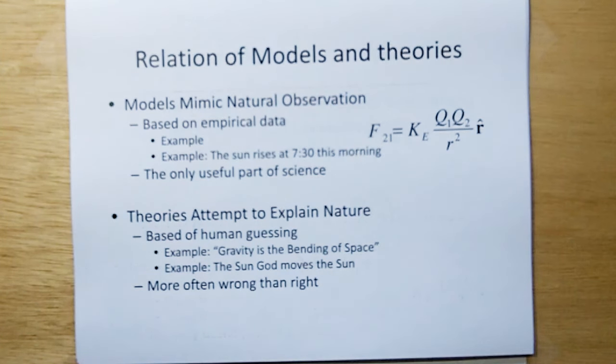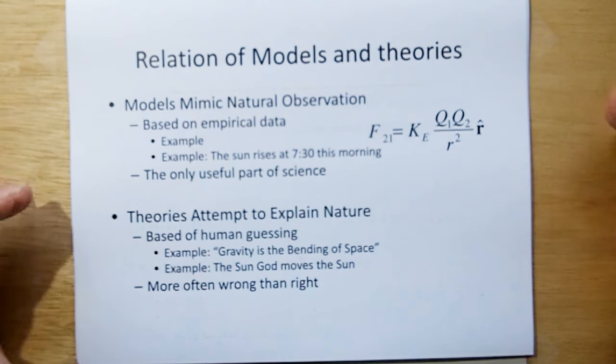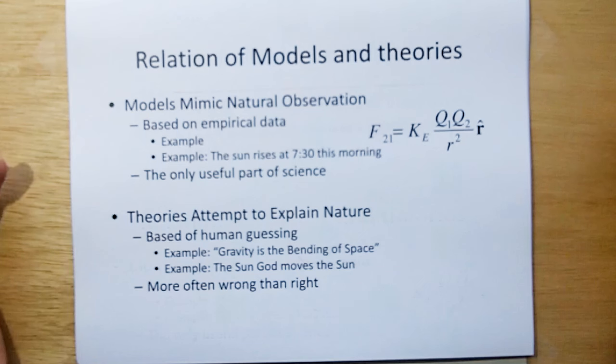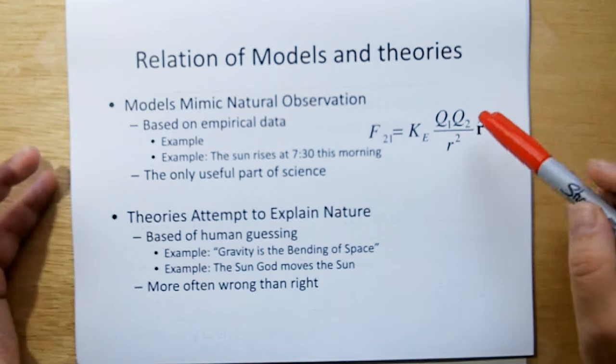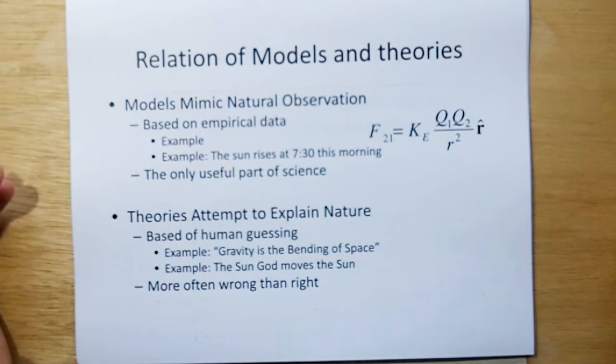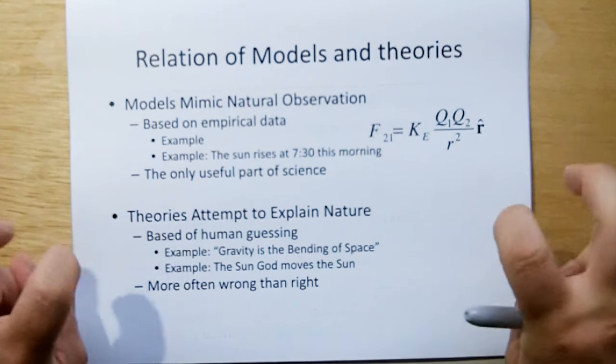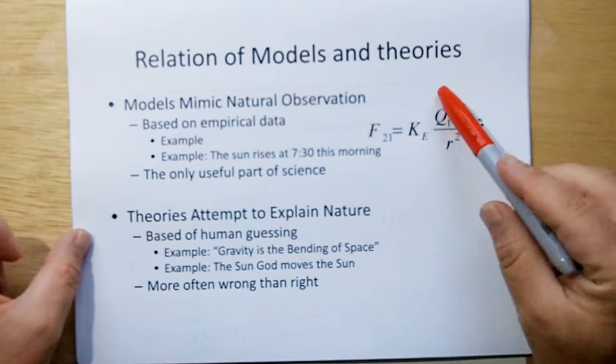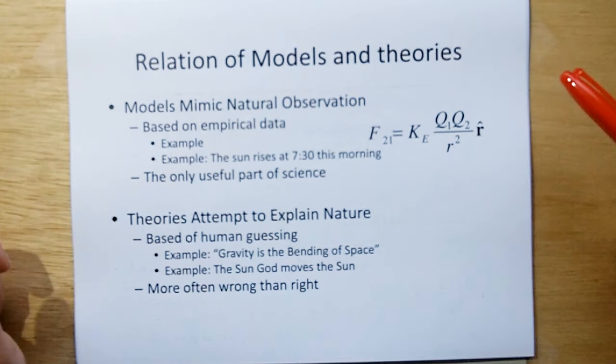Let's talk about the relationship between models and theories. A model is a means to mimic a natural observation, and given here is a mathematical model of what's called Coulomb's model. Other people call it Coulomb's law. I don't. It's not a law. It's just a mathematical mimic of empirical data.